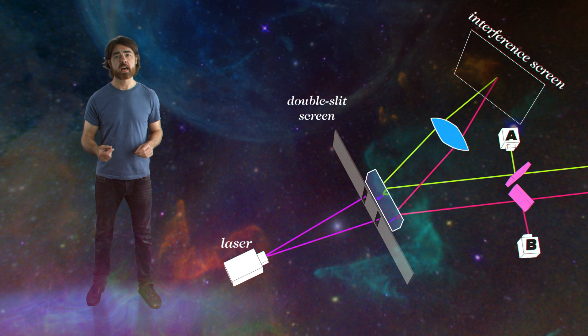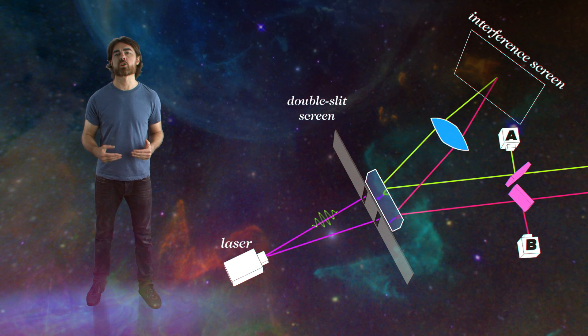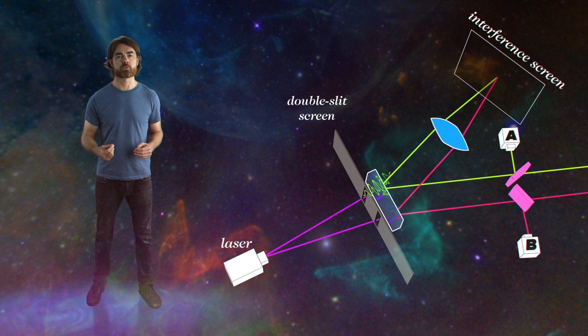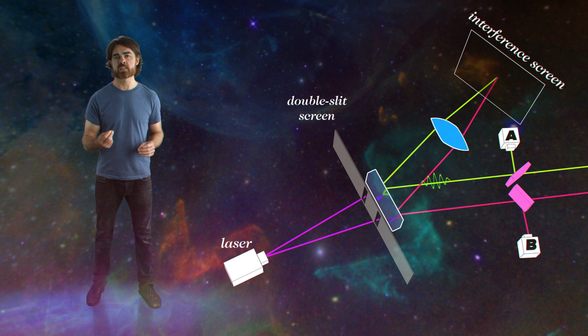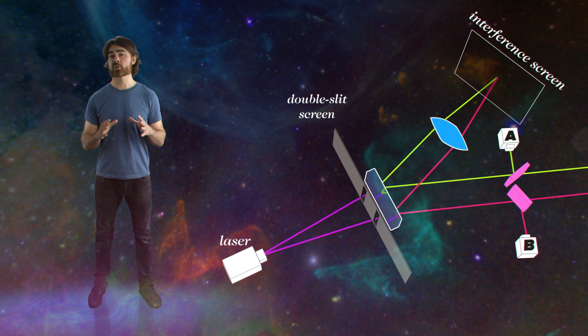We start with a standard double slit apparatus. Photons are fired one at a time through the two slits. On the opposite side, each photon is split into an entangled pair of photons. One of these is sent off to a screen where its location is recorded, while the other is used to identify which slit the original photon passed through. The setup looks like this.